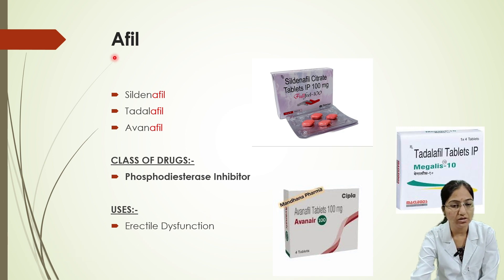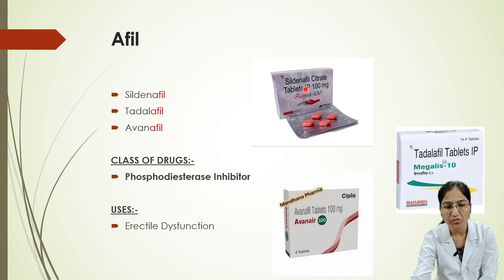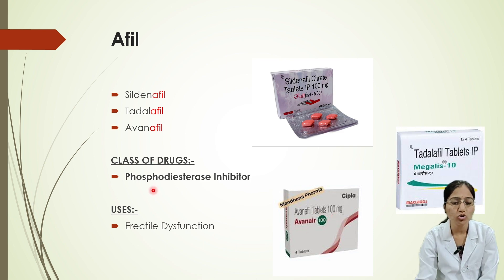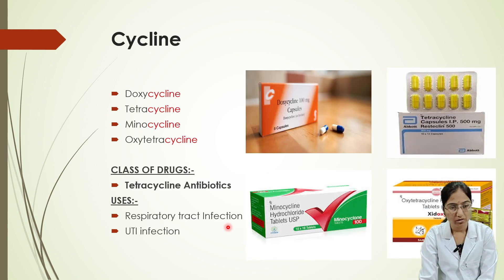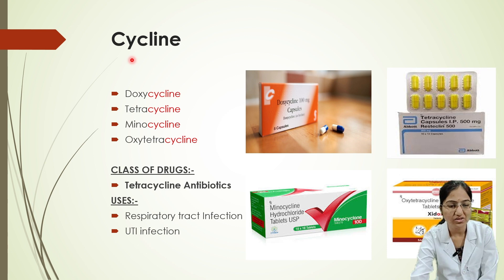Next, we'll look at drugs whose names end with '-afil'. Examples include sildenafil, tadalafil, and avanafil — you can observe the words ending with '-afil'. This drug class is phosphodiesterase inhibitors, and it is prescribed for erectile dysfunction.